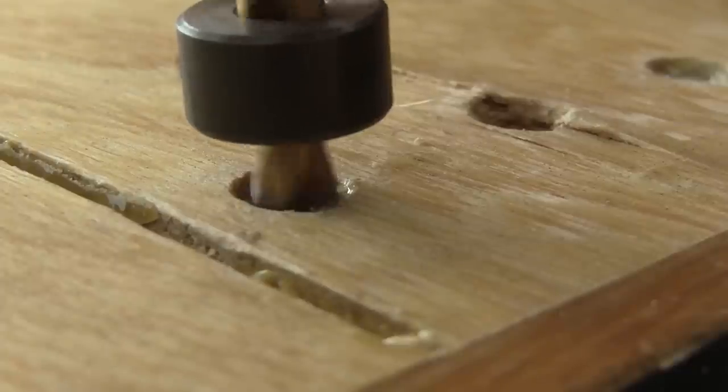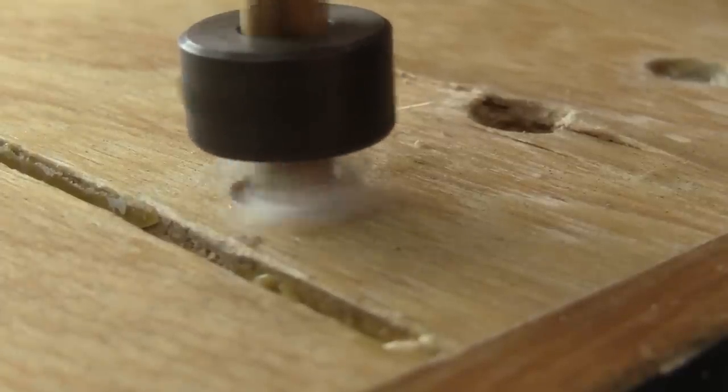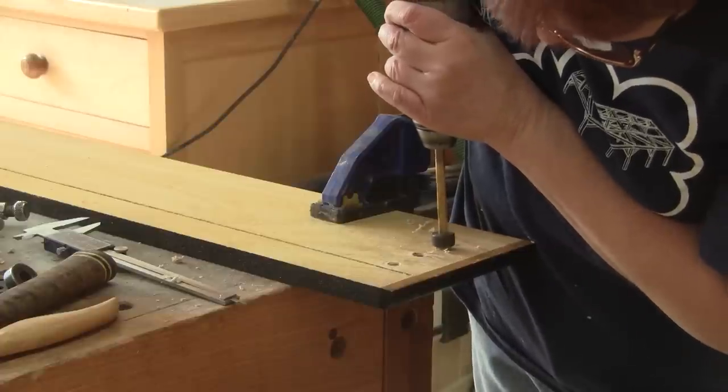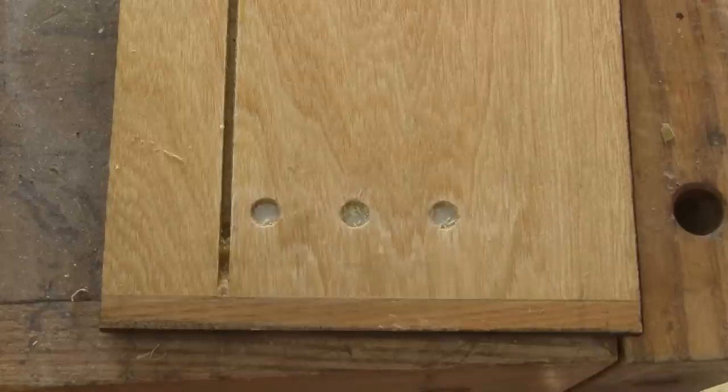To remove the plastic dowels that are stuck inside the holes, I just drill the holes using a depth collar to prevent drilling through the front panel. But it's not very efficient.